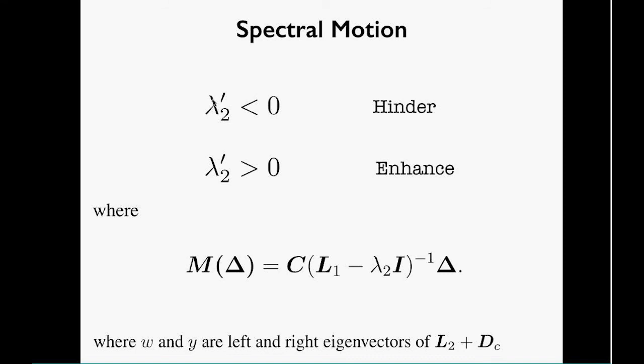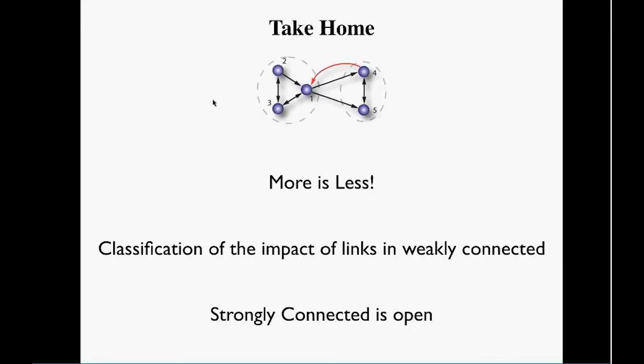My take-home message is: sometimes more can be less, as we saw here. This is actually quite generic when you try to break the master-slave configuration. Now, after these long formulas, we have a way to predict the impact of the links and tell which links and what topological properties will be involved with this breaking of synchrony.